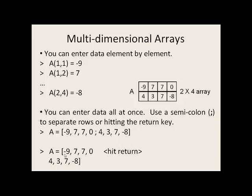Alternatively, we could have done this, where we say negative 9, 7, 7, 0, hit the return key, and because there's no end bracket, MATLAB and Octave know to wait. So then we can enter in the values for the next row, 4, 3, 7, negative 8, end bracket. And if we hit return again, the command will be issued and all the values will be put into the array.